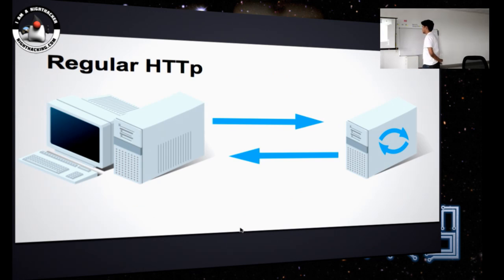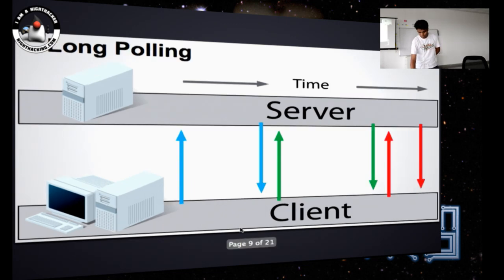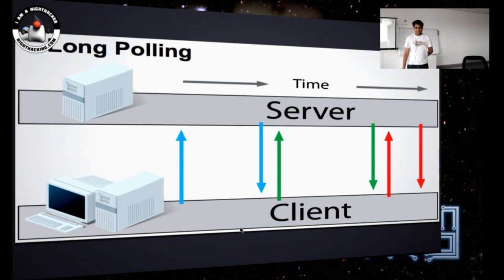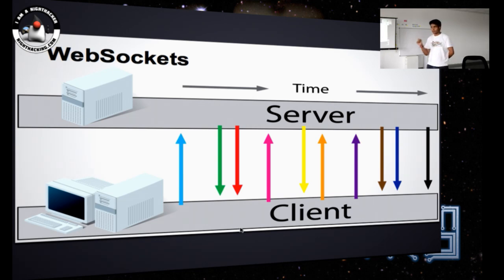In a normal HTTP request, the client requests information, sends a request to the server, and gets a response back. In case of polling, if there is no information it gets a timeout error, and that happens again and again until data is fetched. In long polling, the connection persists for a few minutes, leading to many unnecessary open sockets. But in WebSockets, only a single connection is opened. Since it's full duplex and bidirectional, both the client and server can send and receive messages simultaneously, without restricting either side to only send or receive.